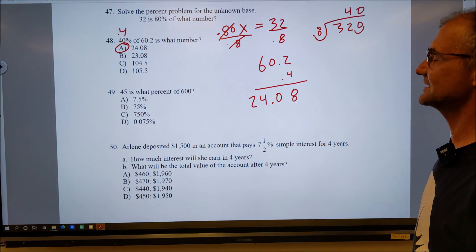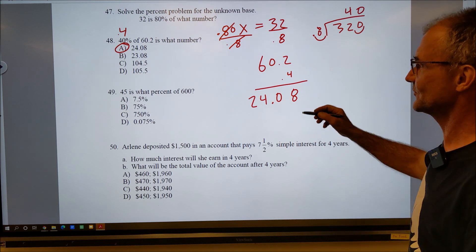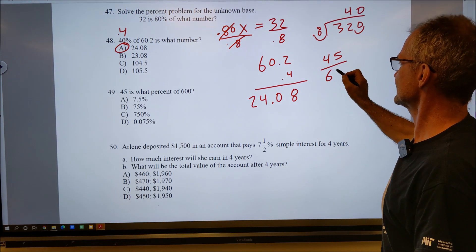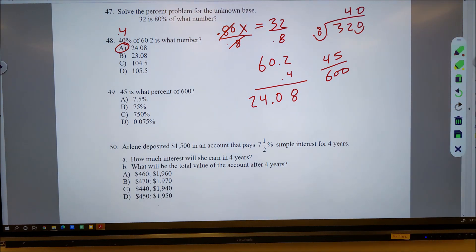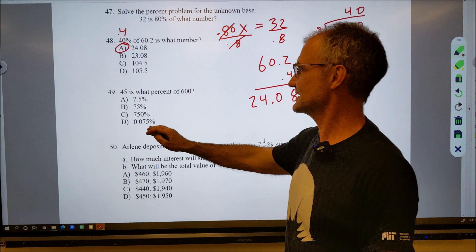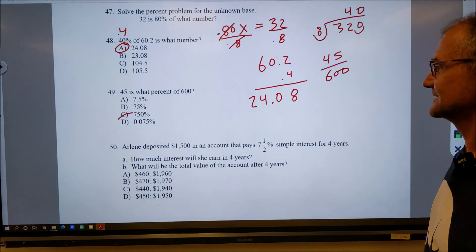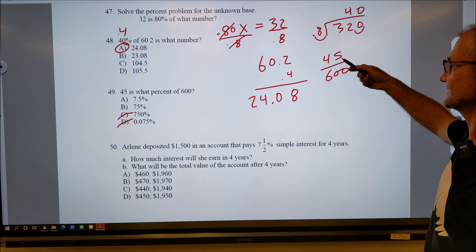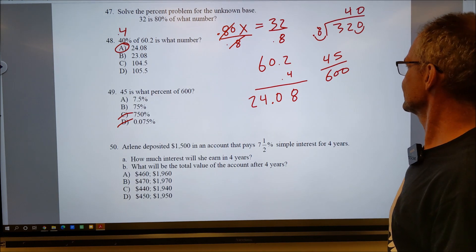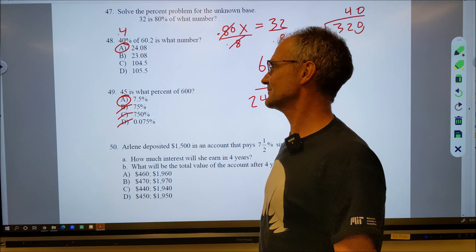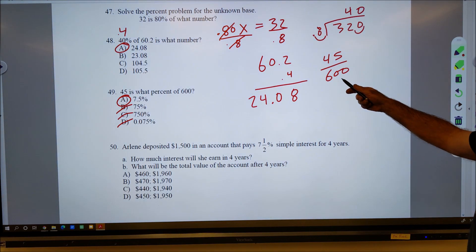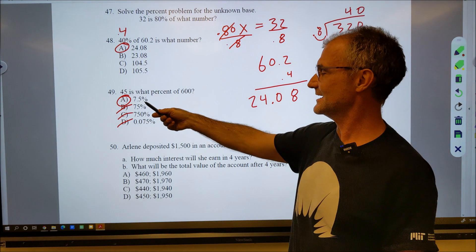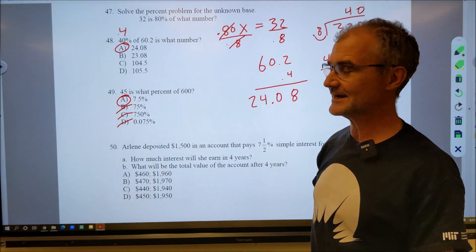Number 49: 45 is what percent of 600? So let's see if we could get rid of any of these. 750% doesn't make any sense. It's also not going to be that really small one. 75% would be like three quarters, so it'd be closer to like 400 or so. So that doesn't make any sense. So the only one that will really work is that one right there, 7.5%. That kind of makes sense because 10% of 600 would be 60, right? So 45 is a little bit less than that, so less than 10%, so 7.5%. So you don't have to multiply that one all the way out.